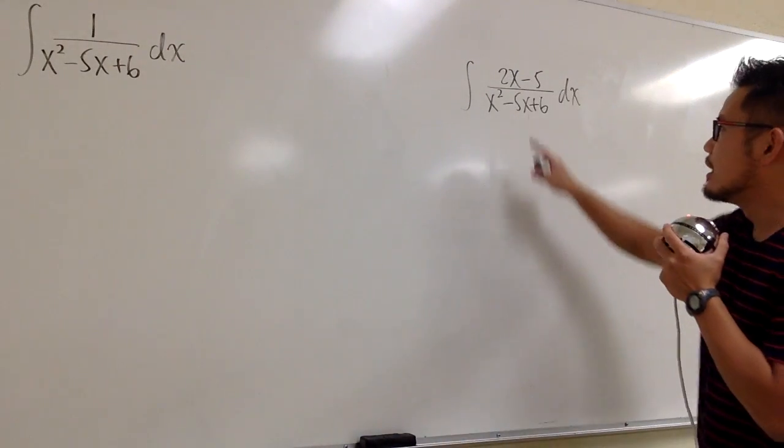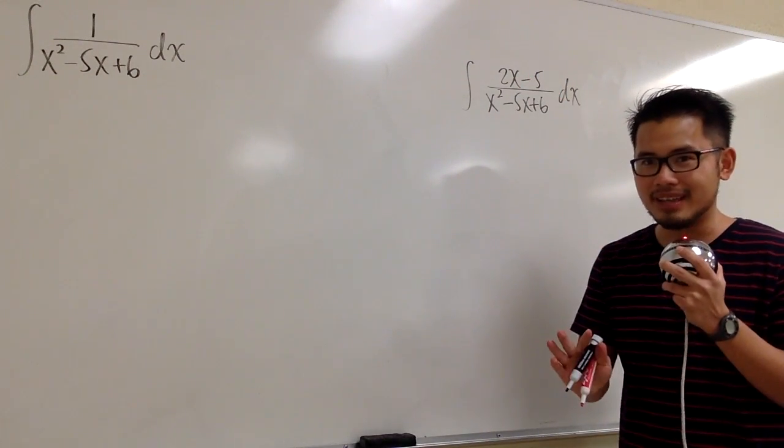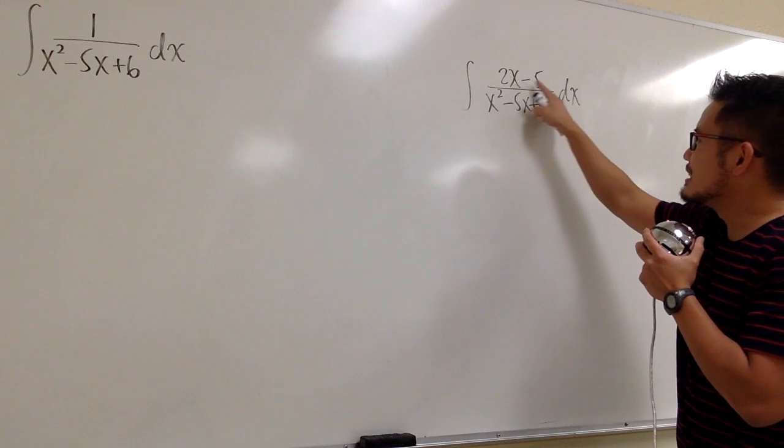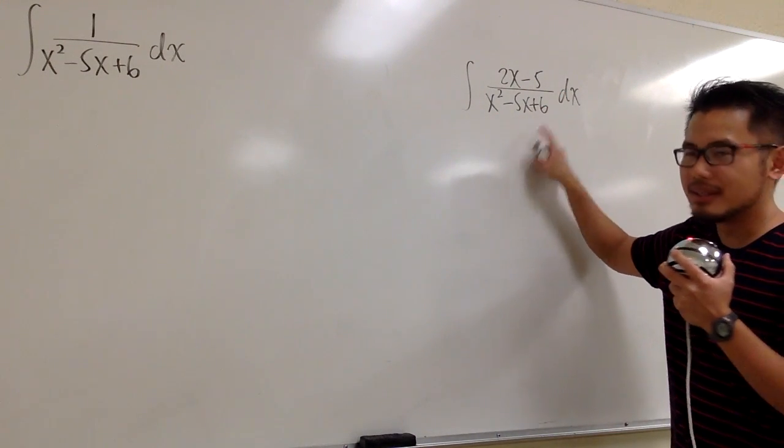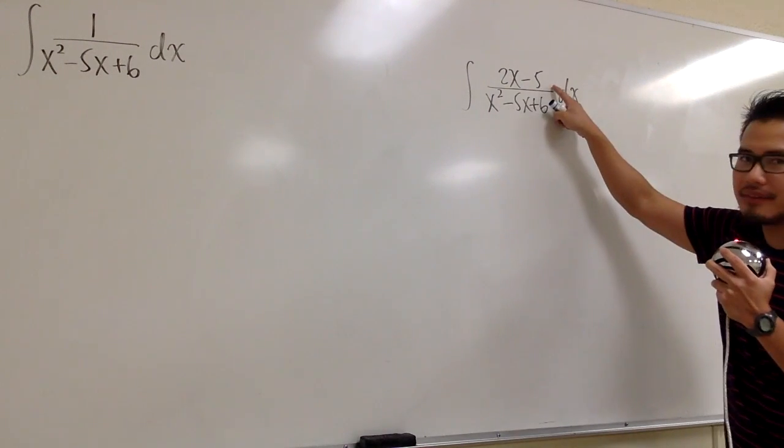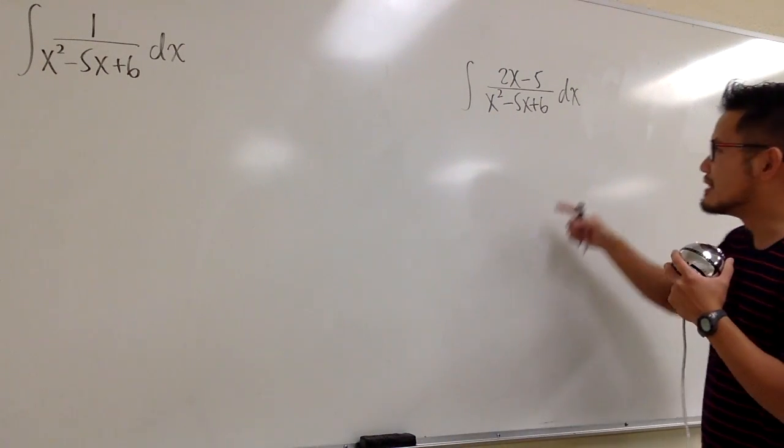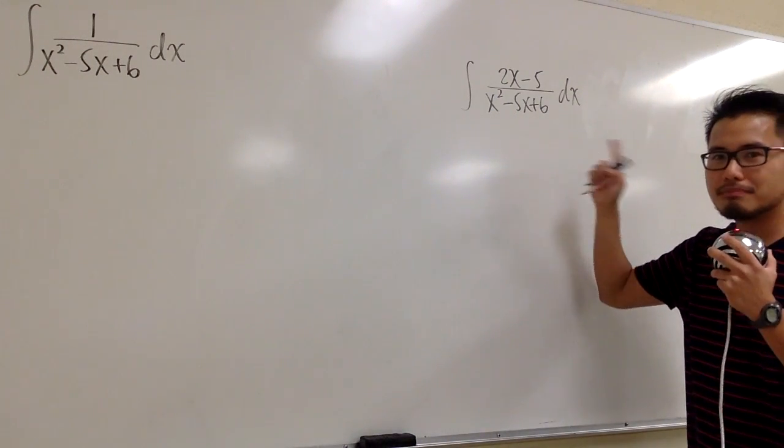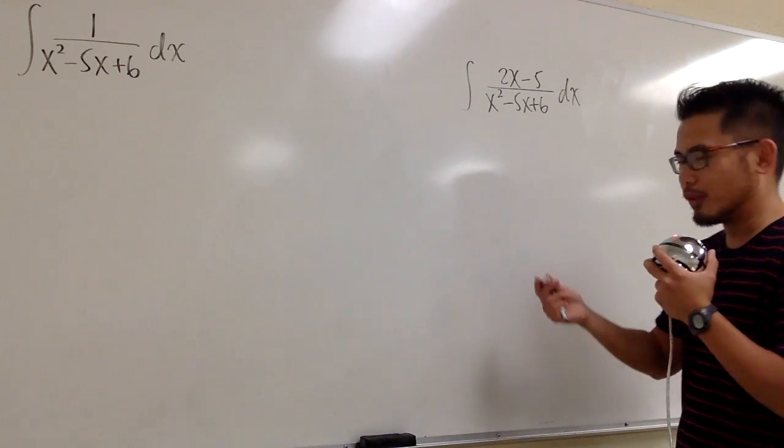On the other hand, when we have the 2x minus 5, this is much more preferable. Because why? This 2x minus 5 happens to be exactly the derivative of the denominator. The derivative of x squared is 2x, and the derivative of minus 5x is minus 5. The derivative of plus 6 is 0, so it doesn't matter. So you see, we can just do this by u-substitution. Let's finish this within like 40 seconds or so.